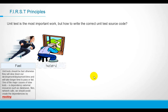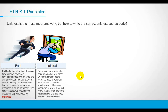The second principle is isolated. We should never ever write tests that depend on other test cases. By making independent tests, it is easy to keep our tests focused only on a small amount of behavior. When a test fails, we will know exactly what has gone wrong and will have no need to debug the code itself.